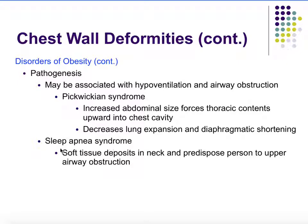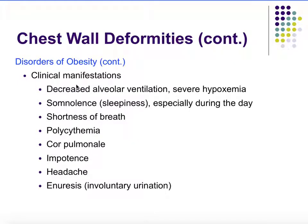Sleep apnea syndrome is also associated with obesity. Soft tissue can be deposited in the neck, predisposing the person to airway obstruction especially during sleep. Clinical manifestations include decreased alveolar ventilation leading to severe hypoxemia — low oxygen in the blood — daytime sleepiness associated with sleep apnea, and shortness of breath. Polycythemia occurs as the body responds to hypoxemia by increasing red blood cell production. Cor pulmonale develops as hypoxemia causes vasoconstriction of pulmonary blood vessels, increasing pulmonary pressure and causing right ventricular remodeling — right-sided hypertrophy. Impotence, headaches, and enuresis (involuntary urination) have also been associated.